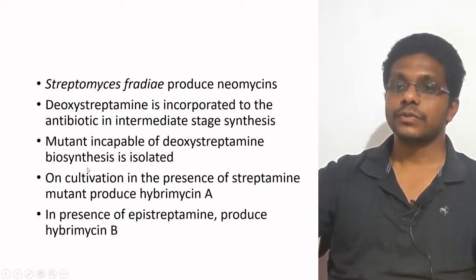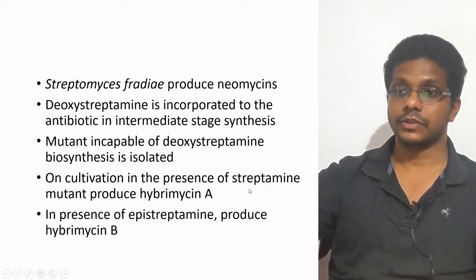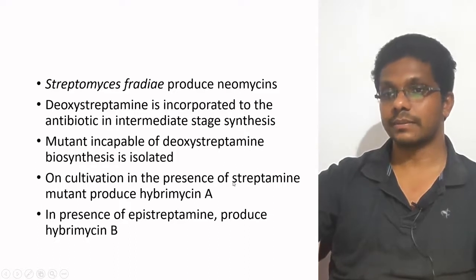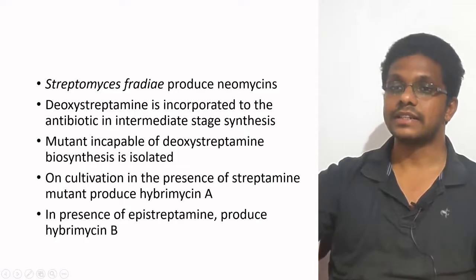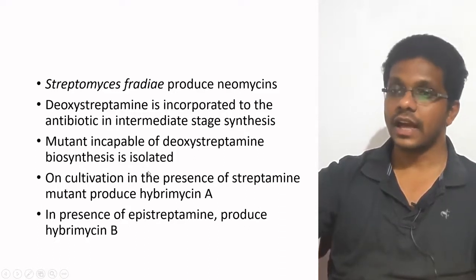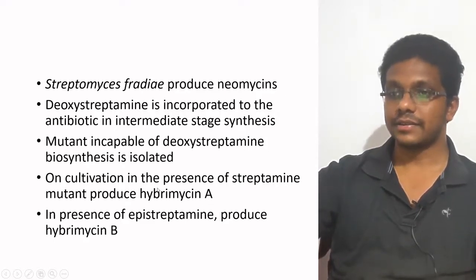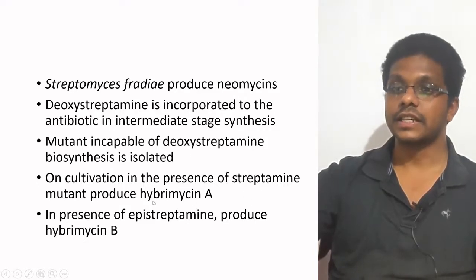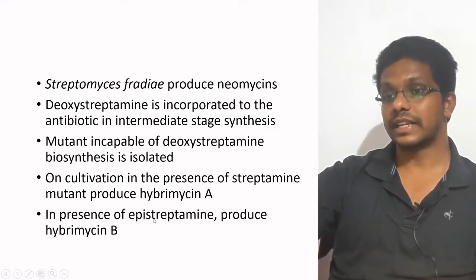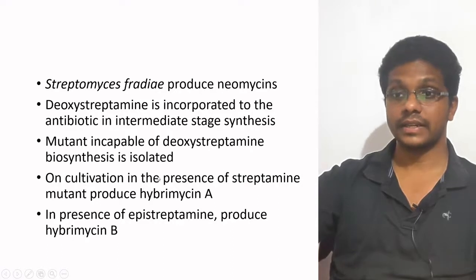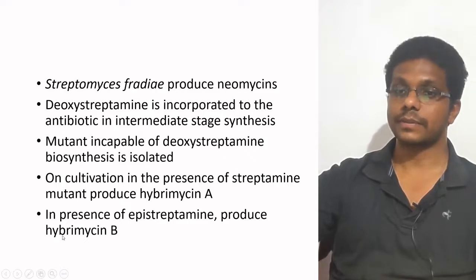Then what we do is add a precursor to the bacteria called streptamine. The defective microorganism of Streptomyces fradiae incorporates streptamine instead of D-oxystreptamine into the pathway and produces hybromycin A. So the ordinary bacteria used to produce neomycin, but when we introduce a mutation and add streptamine, it produces hybromycin — a different antibiotic with a different spectrum of activity. Another option is: instead of streptamine, if you give epistreptamine, the microorganism will produce hybromycin B.